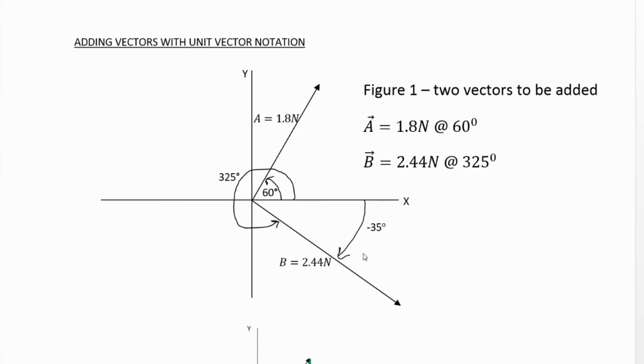Or if we want to go clockwise, we can, but now that angle becomes negative 35. So you can see here 325 degrees is the same location as negative 35 degrees. And this is important when we find our components, we can choose to use 325 or negative 35, either one will work.